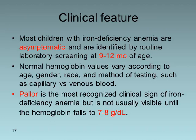Most children with iron deficiency anemia are asymptomatic and are identified by routine screening tests done at 9 to 12 months of age using the RDW — the red cell distribution width.